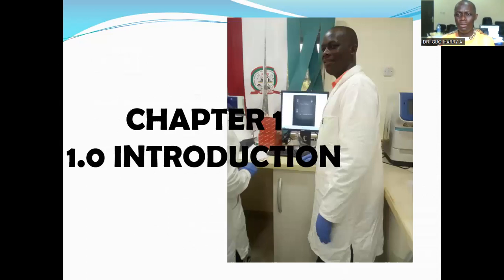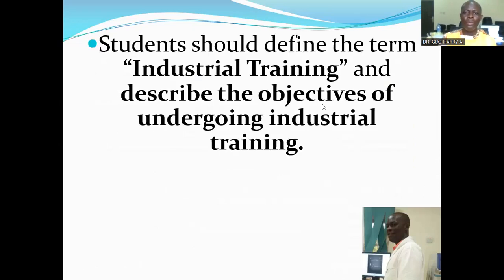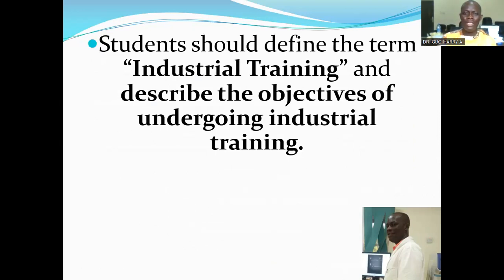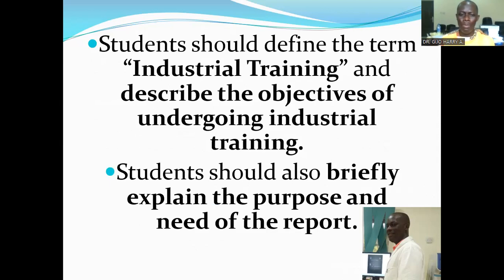The next aspect of the industrial training report is the introduction, which is usually written as chapter one of the report. The introduction should have a definition of the meaning of industrial training, and students are also expected to describe the objectives of undergoing industrial training, and briefly explain the purpose and need of the report.